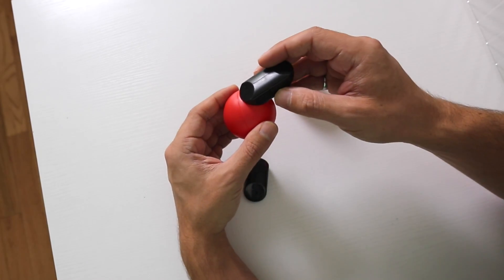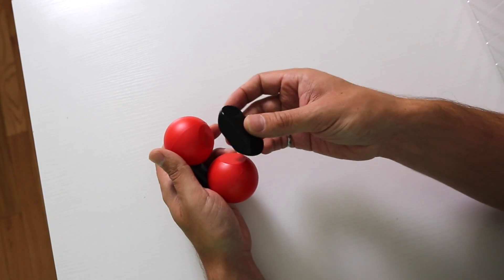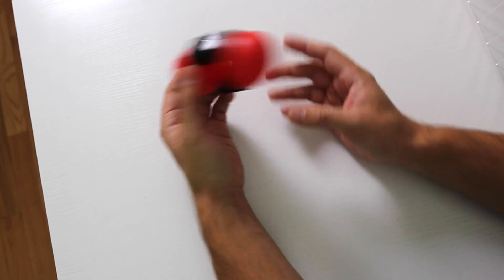So if you connect one double bond piece, connecting two of the flat faces on the oxygen and another one on the other side, you have formed O2.